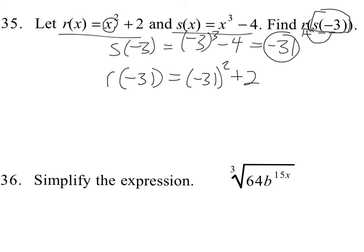I'm plugging this in for x. Negative 31 squared is 961 plus 2. We get a final answer of 963.